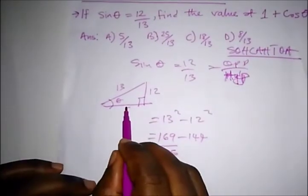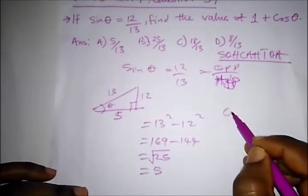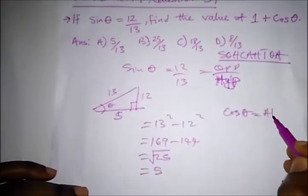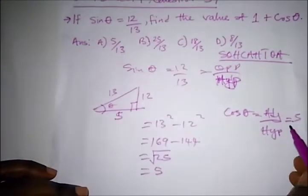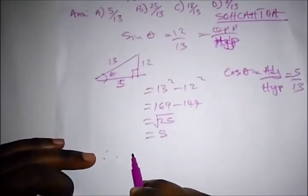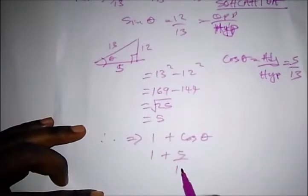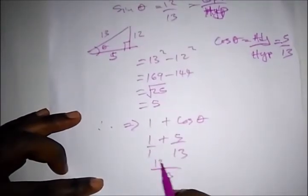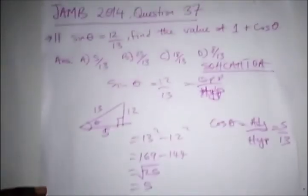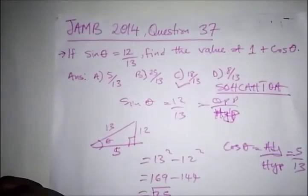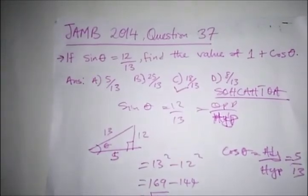We are told to find 1 plus cos θ. cos θ is adjacent over hypotenuse, which is 5 over 13. Therefore, 1 + cos θ = 1 + 5/13 = 13/13 + 5/13 = 18 over 13. The correct option is option C. Thank you for staying tuned to Destined to Win Tutorial — please like, share, and subscribe to our channel. Stay blessed — you are destined to win!